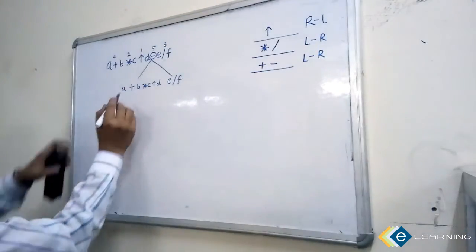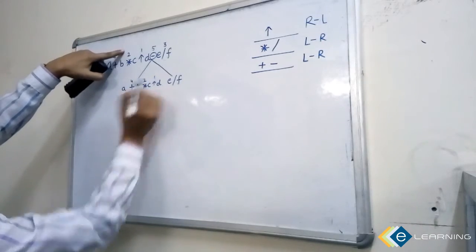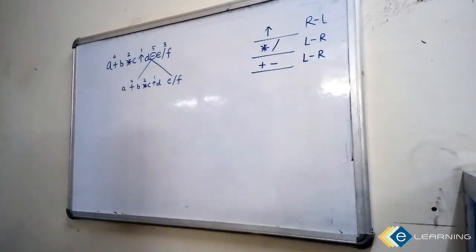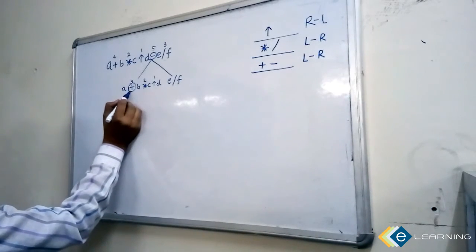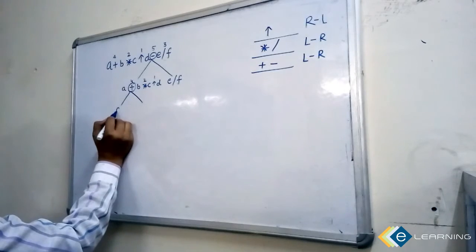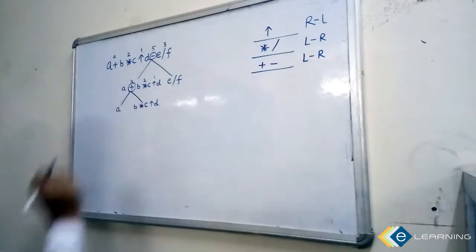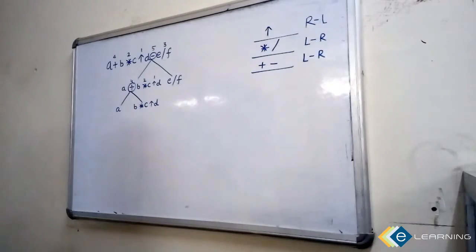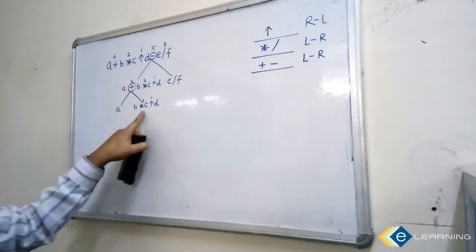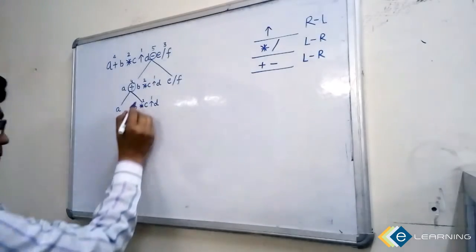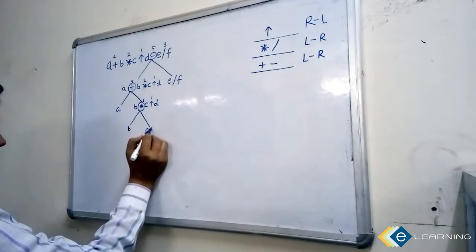Now, same procedure. Take the numbering of the operators from above — plus is number four, star is number two, and power is number one. In this sub-expression, which operator is evaluating last? The plus operator is evaluating last, so make it the parent and divide this sub-expression into two parts: A, and the sub-expression B star C power D. In that sub-expression, star is second and power is first, so multiply evaluates last — make it parent and divide into C power D.